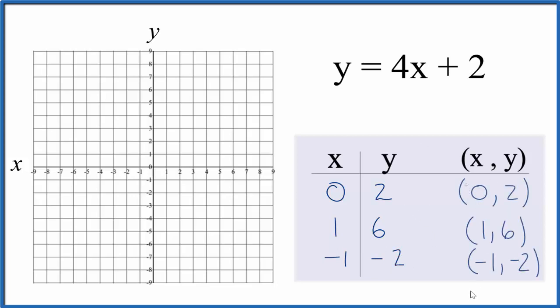So these are the points that we'll graph for the equation y equals 4x plus 2. Let's start with x is 0 and y is 2. So x is 0 right here, and then y is 2. That's our first point.